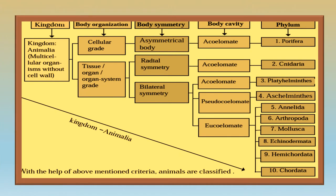Animals are put into various sub-categories depending on their body organization — whether it is a very low-level cellular grade, or higher organisms with tissue, organ, and organ system grade. Body symmetry is the next division with three types: asymmetrical, radial, and bilateral. Then body cavity determines whether we have acoelomate, pseudocoelomate, or eucoelomate categories.